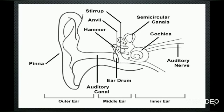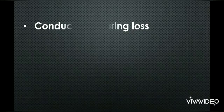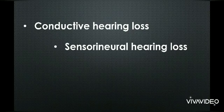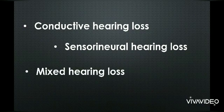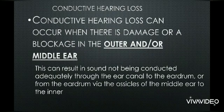According to these basic parts, we will learn the types of hearing loss. So first of all, here we have the types of hearing impairment. The first is conductive hearing loss, the second is sensorineural hearing loss, the third is mixed hearing loss, and the fourth is auditory neuropathy.